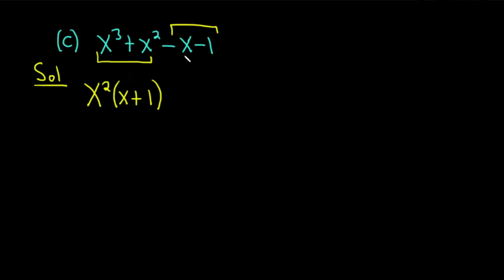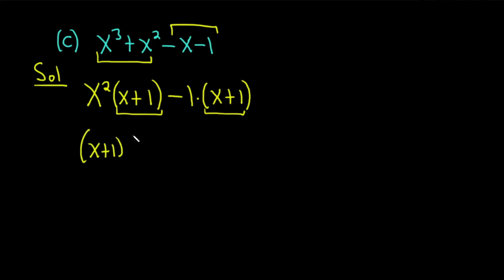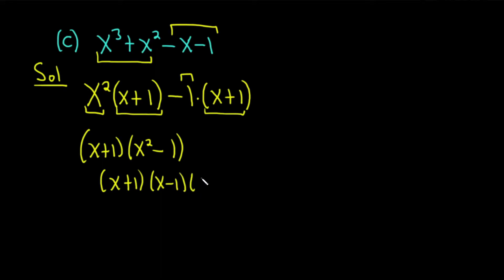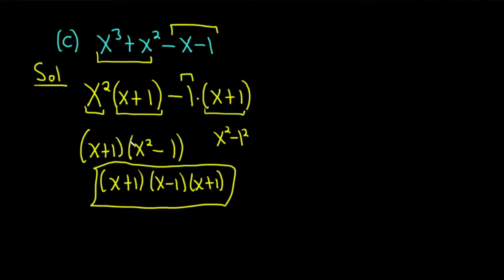Now we want to factor something out from minus x minus 1 so that we're left with an x plus 1. That something is going to be a minus 1, giving us minus 1 times (x plus 1). You can check: minus 1 times x is minus x, minus 1 times positive 1 is minus 1. So we pulled out an x squared from the first two terms and a minus 1 from the last two terms, forcing a common factor of x plus 1. We pull out x plus 1 and we're left with x squared minus 1. But x squared minus 1 is again the difference of squares — it's x plus 1 times x minus 1. So the full factorization for Part C is x plus 1 times x minus 1 times x plus 1.